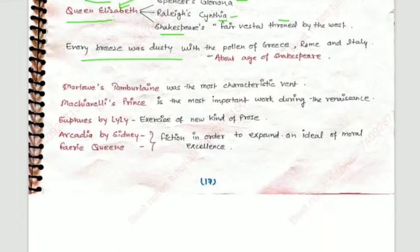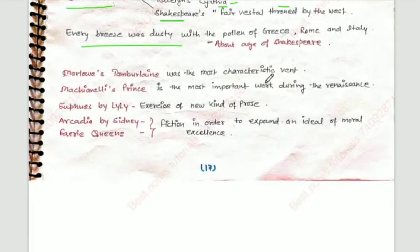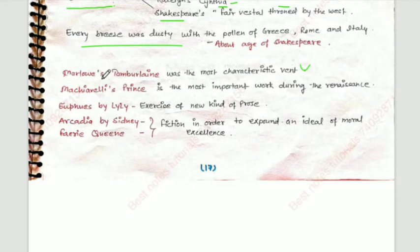Some short notes: Malos Tamilin was the most characteristic wind of the East. Machiavelli's Prince is the most important work during this period. Machiavelli's work, The Prince, is a very important work to remember.